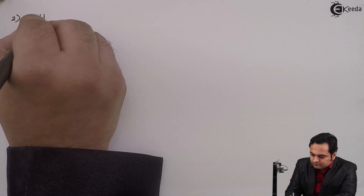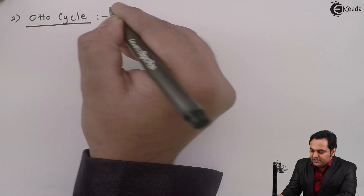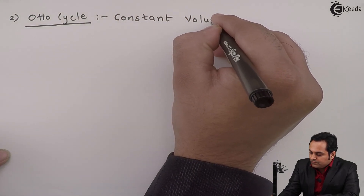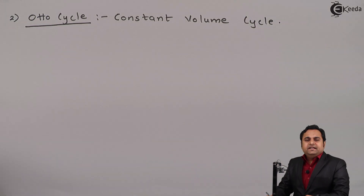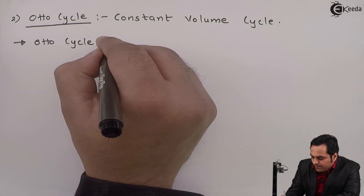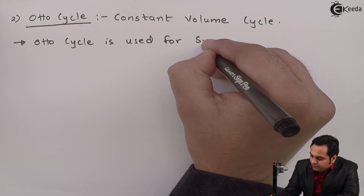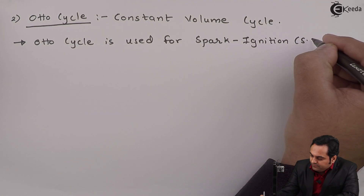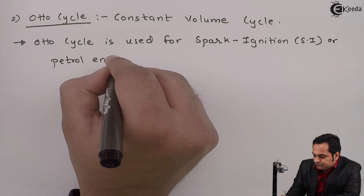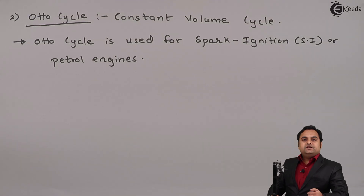In this video we will see the second type of gas power cycle called the Otto cycle. It is also called the constant volume cycle because the heat addition process takes place at constant volume. The Otto cycle is used for spark ignition, also called petrol engines.